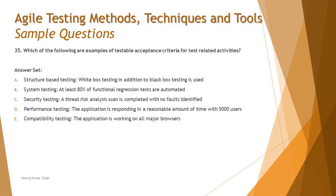Option C says security testing: a threat risk analysis scan is completed with no faults identified. Security testing is about conducting a vulnerability scan, and if there are no faults identified, that's a successful result. It's achievable because you can conduct a threat scan and check the output — so this is an achievable acceptance criteria.